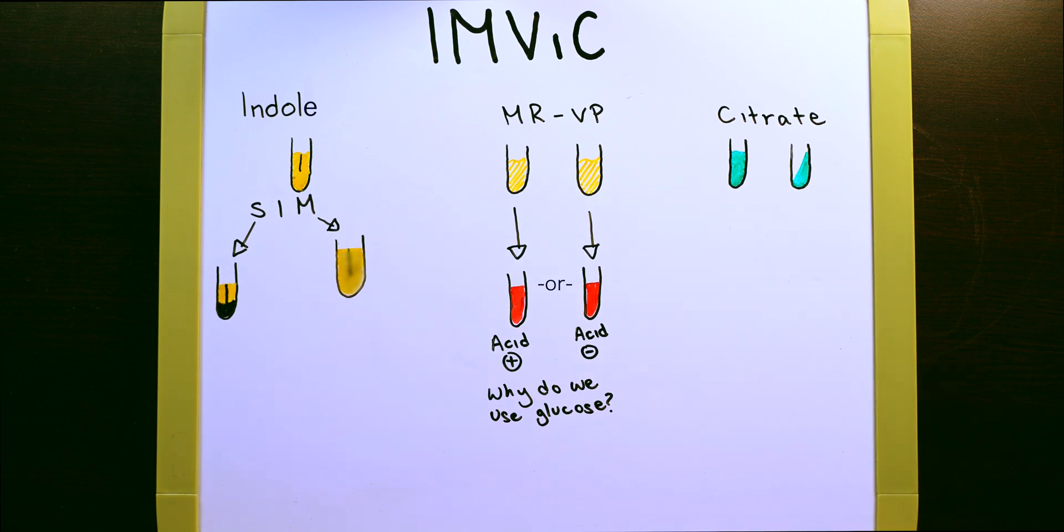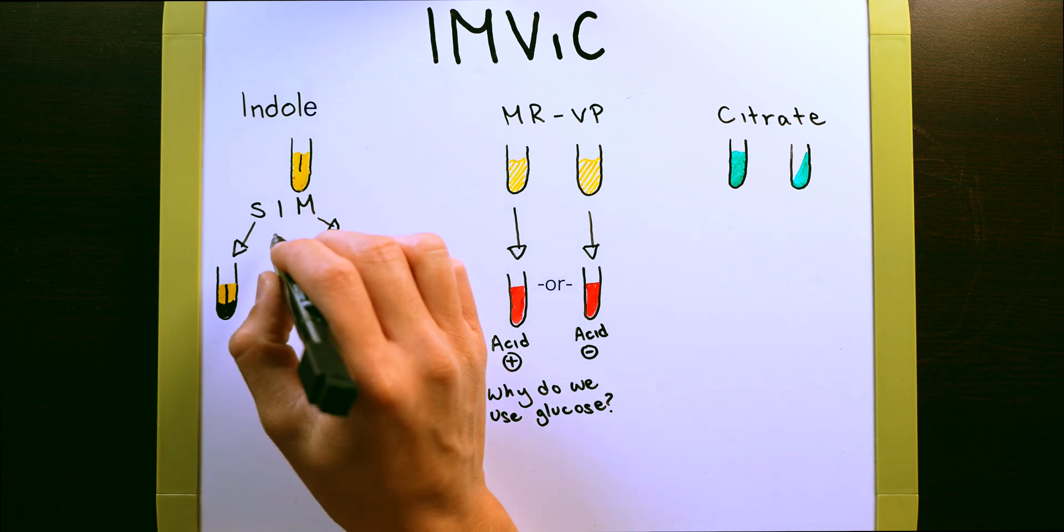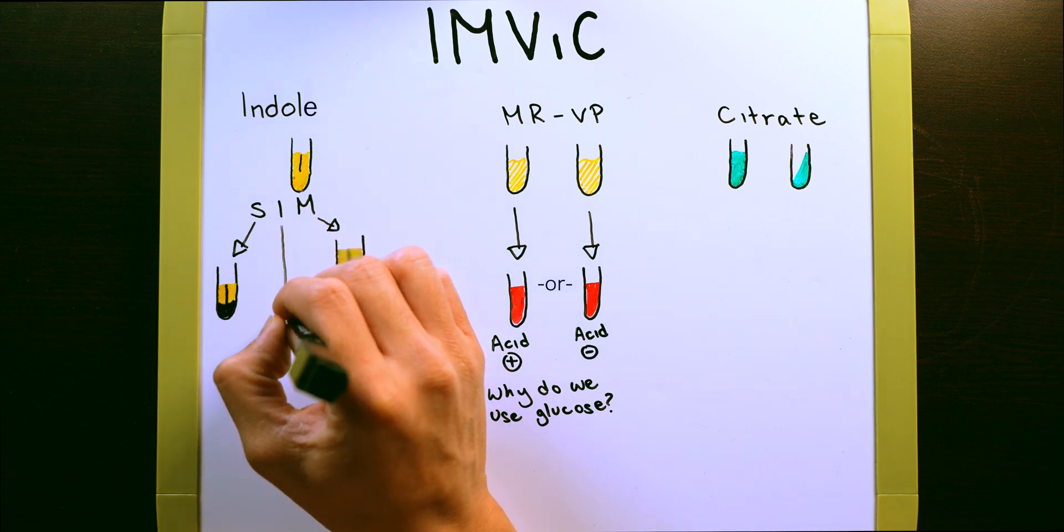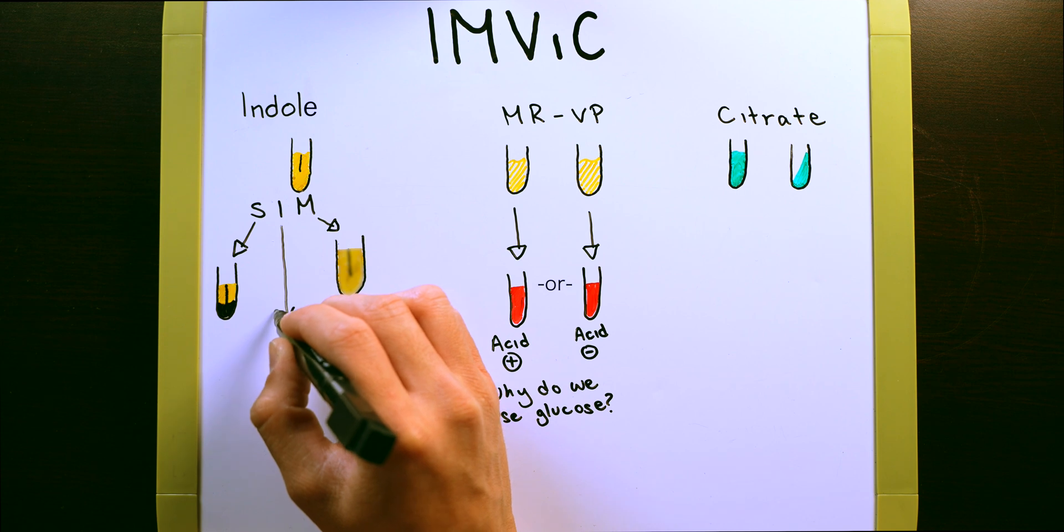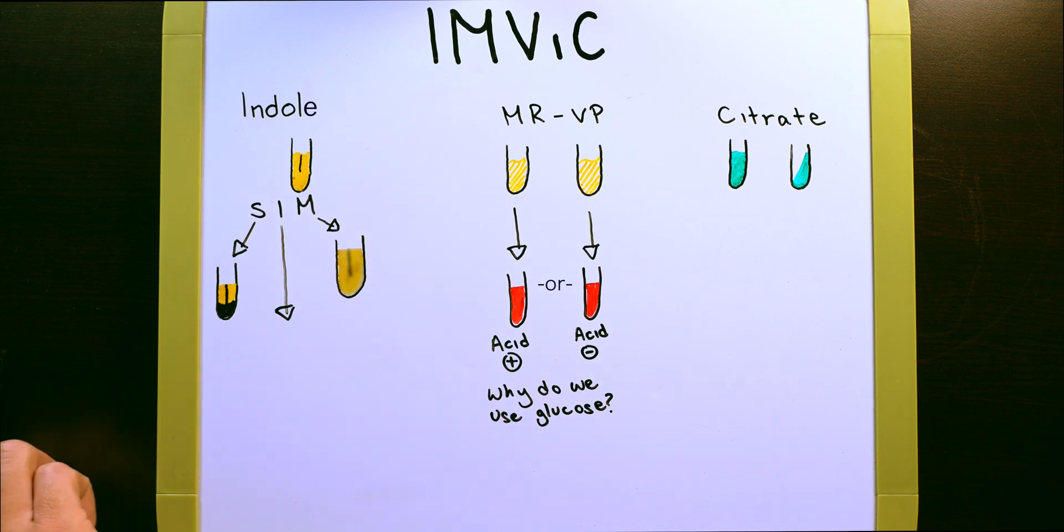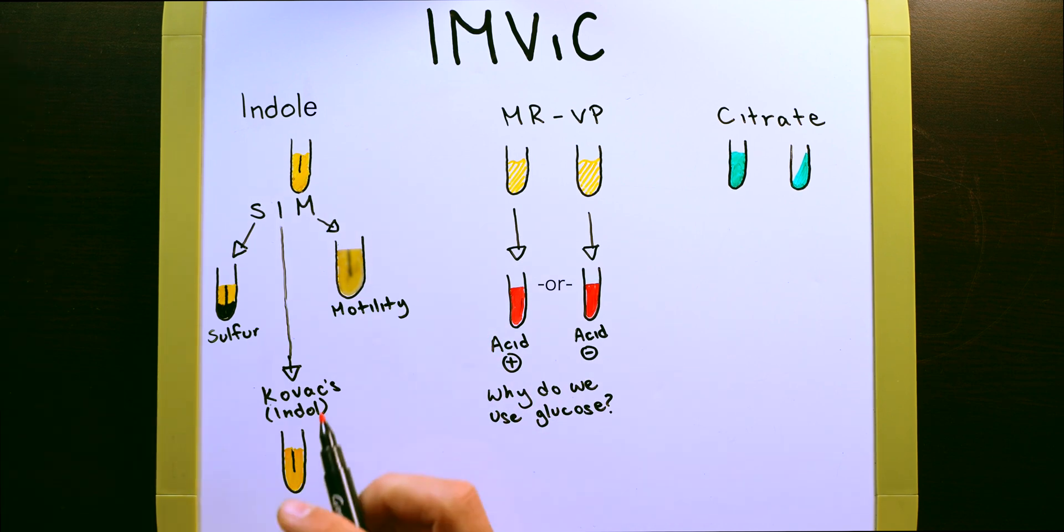Once you've examined the test tube for these two things, you can move over to the indole test. The indole test requires a reagent called COVAX reagent. And when you add your COVAX reagent, this reaction will happen at the top layer of the test tube. Because remember, this is a solid agar test tube.